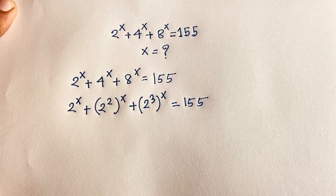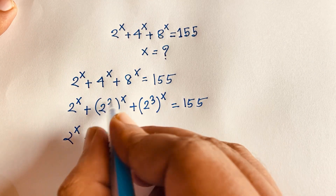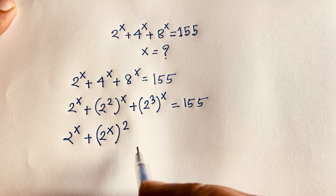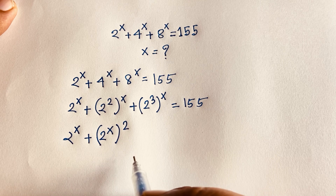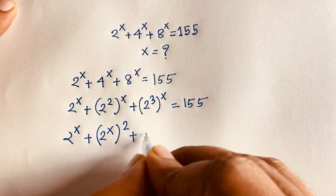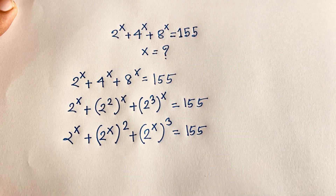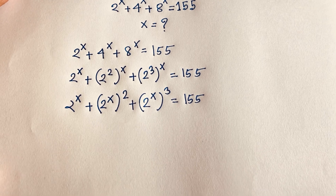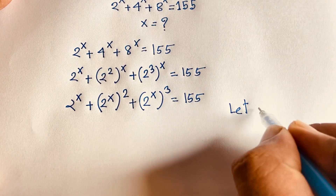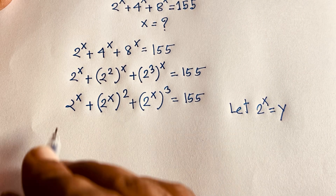This equation becomes: 2 to the power x, plus 2 to the power 2x, plus 2 to the power 3x, equals 155. I applied the exponential law: (a^n)^m = a^(nm), moving the exponent inside the bracket. Now let 2 to the power x equal y. Then the equation becomes y plus y squared plus y to the power 3 equals 155.